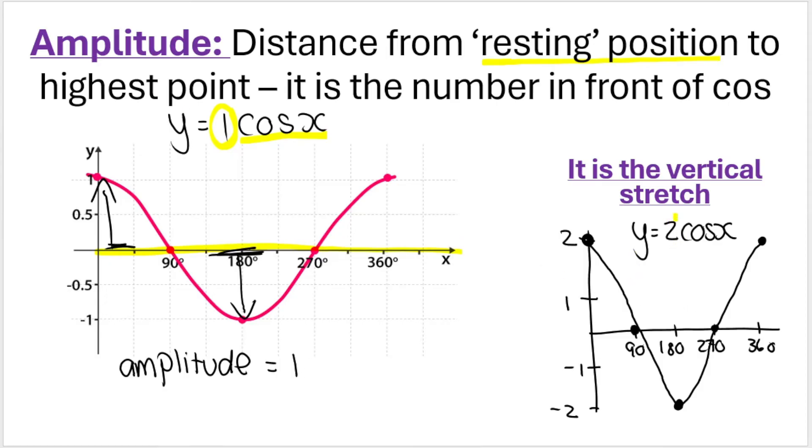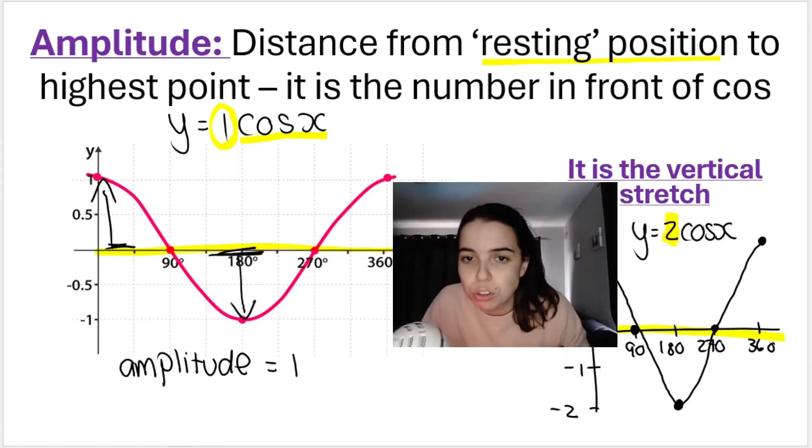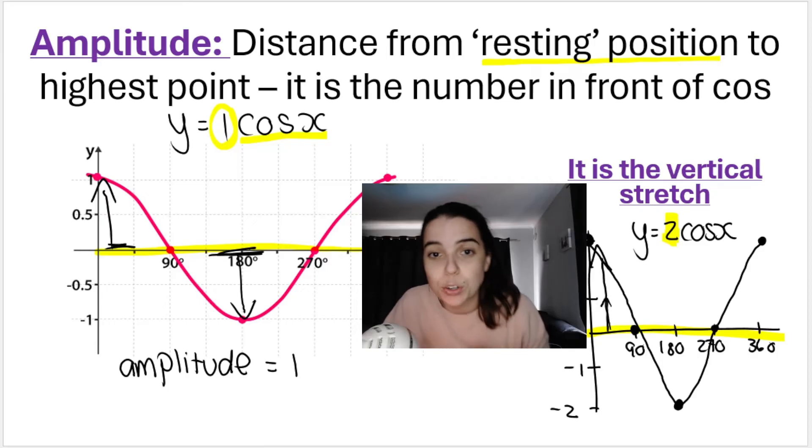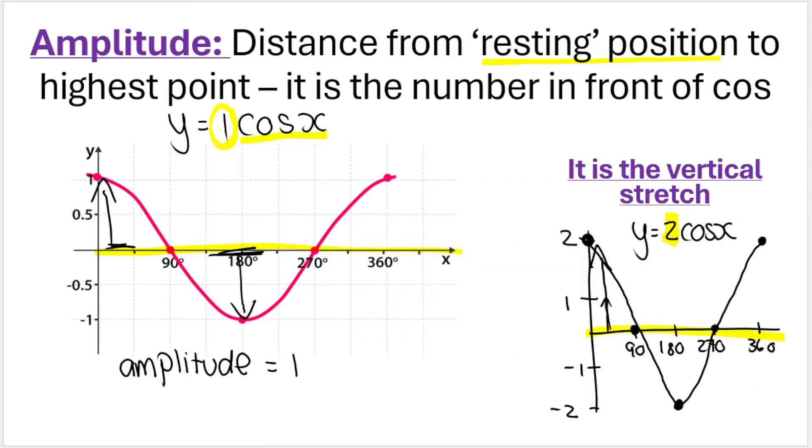Over here you can see that if I change the amplitude, so now I make it a two, it causes me to vertically stretch the graph. So you can see here the distance from this position to the maximum is no longer one, it's two. So it stretched the graph; it basically took the graph and did that. Okay, that's changing the amplitude.